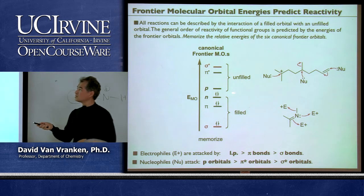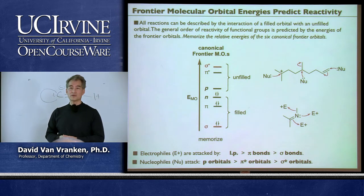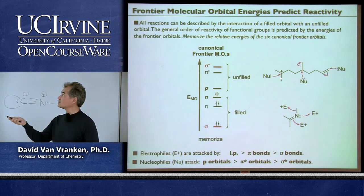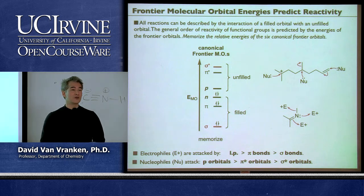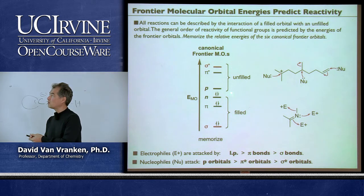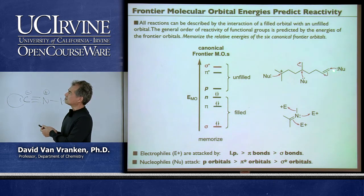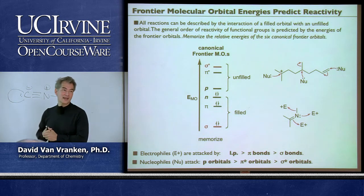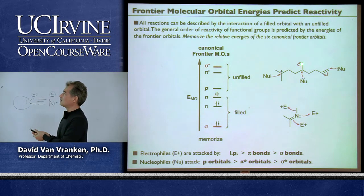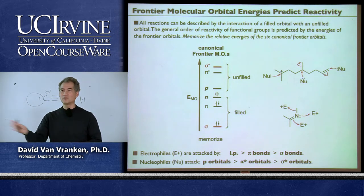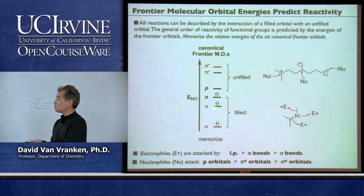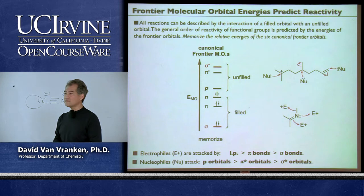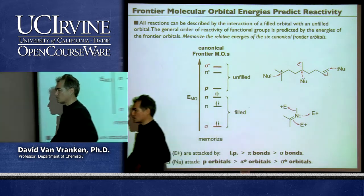Now the unfilled orbitals: the easiest place to put electrons—lowest in energy—is an empty p orbital. That's why carbocations are so reactive. It's not because of the positive charge—boranes have no positive charge and react at diffusion-controlled rates with nucleophiles, because the empty p orbital is so low in energy. The next easiest place to attack is the pi star. And the hardest is the sigma star—that's why you can't easily take a nucleophile and pop off a methyl anion; the sigma star orbital is so high in energy. If you remember this relative energy ordering for the six types of canonical frontier orbitals, you can make super powerful predictions about chemical reactivity.